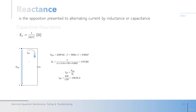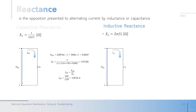The inductive reactance is defined as X_L = 2π × f × L, given in ohms. Applying the same circuit with an inductor at 220V AC, 50 Hz, and inductance of 0.2 henries, the inductive reactance equals 62.8 ohms. The current equals the voltage divided by the inductive reactance, giving a current of 3.5 amps.